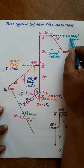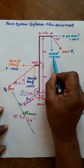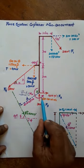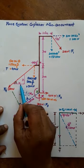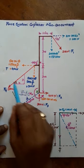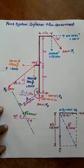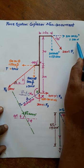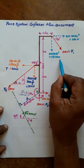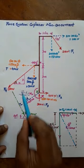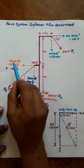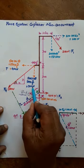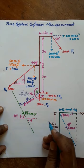For F1: horizontal component is 200 cos 60° = 100 N (positive x-axis), vertical component is 200 sin 60° = 173.20 N (negative y-axis) — fourth quadrant. For F4: horizontal component is 500 cos θ = 400 N, vertical component is 500 sin θ = 300 N.